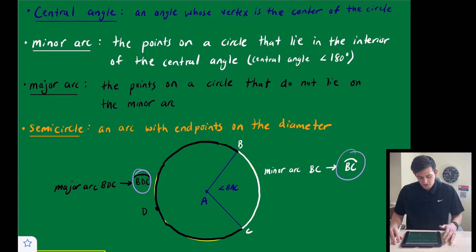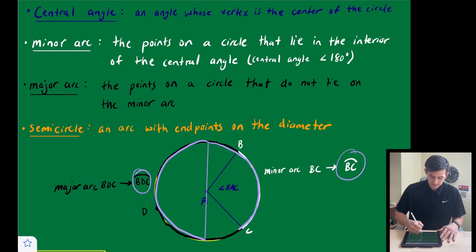And our last definition here, it's not explicitly on our circle here at the bottom, but just the idea of a semicircle is an arc with endpoints on the diameter. So if we were to draw a diameter here, diameter we know has endpoints on the circle and it goes to the center, then we could say our semicircle would be there, and also right here.